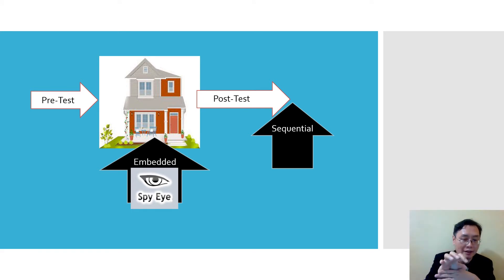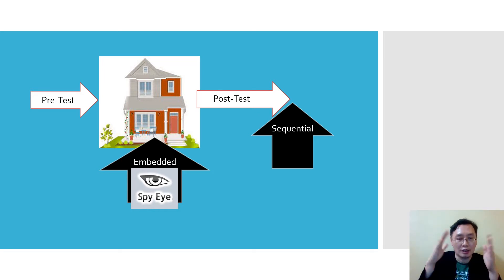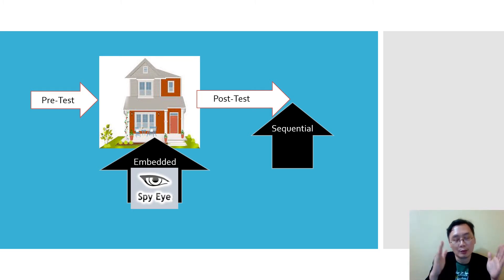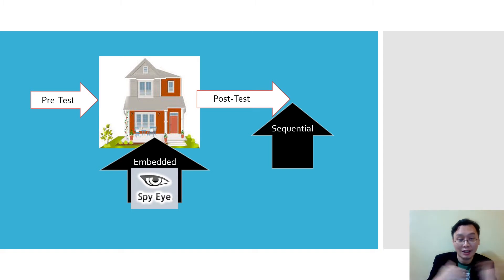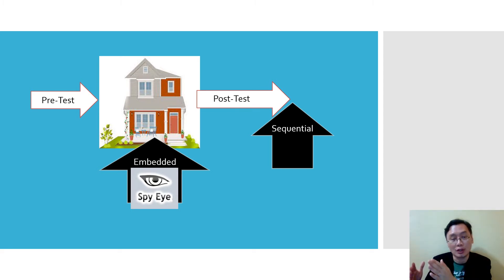In embedded design, you embed your measurement tools or data collection tools within the intervention itself. The other approach is called sequential — after the person has gone through the intervention and the post-test, you interview them about what happened. That's why it's sequential: quantitative first, then qualitative.